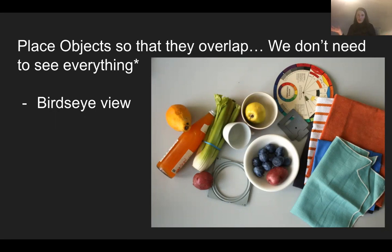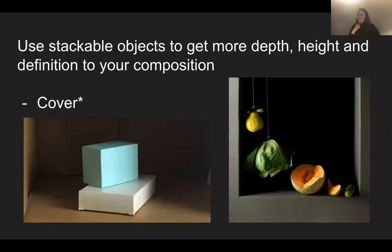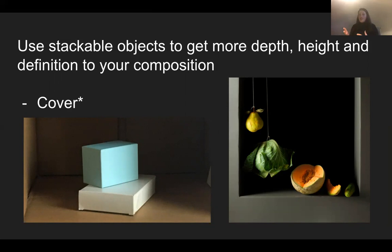Try and be daring with your photographs — get on top of it, do a bird's eye view looking over your still life. Use stackable objects to get more depth, height, and definition to your composition — any sort of little shoe box or jewelry box works. Try and set up your background so there's not a whole lot of distraction. Maybe if you have kids playing in the back, a dog, some laundry — really take into account everything that's going on in your picture plane. As much as we can mute out the background with a lower f-stop and blur it out, sometimes it doesn't blur it out enough to our satisfaction, so just be aware of what's going on in the background.